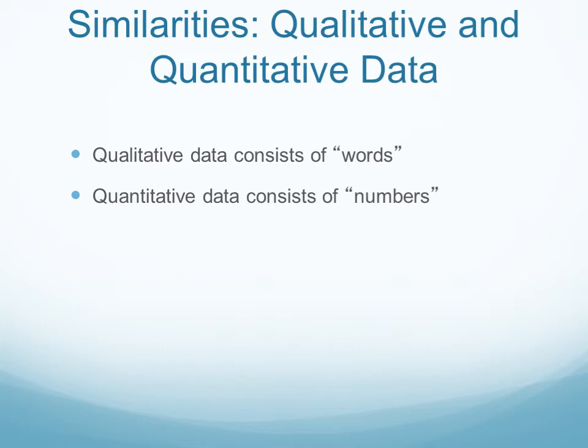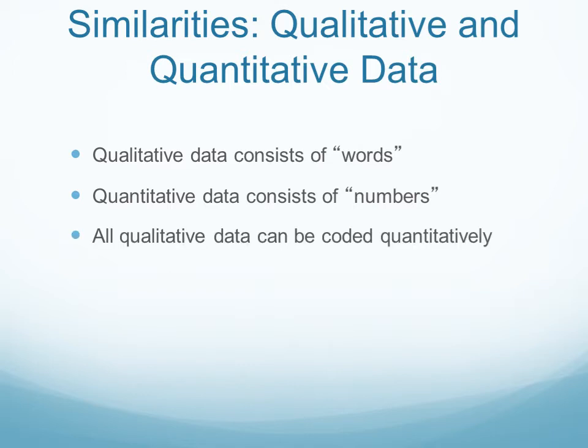Quantitative data, on the other hand, is pretty lean — just numbers. If I give you the number one, it means one. If I give you the number two, it means two. The amount of information in it is very clear. That said, qualitative data can be quantitatively coded. You can look at the number of times the word 'God' appears in the Bible and count those references, converting a qualitative religious text into a quantitative metric.